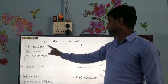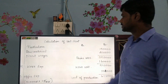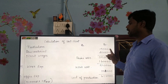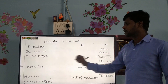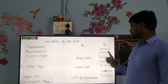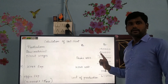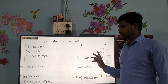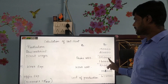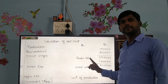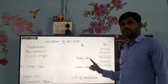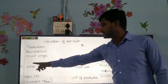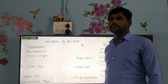Calculation of cost sheet. Particulars, rupees. First, raw material: Rs. 1,50,000. Next, direct wages: Rs. 2,000. The information gives a total prime cost of Rs. 3,50,000. Next, work expenses.